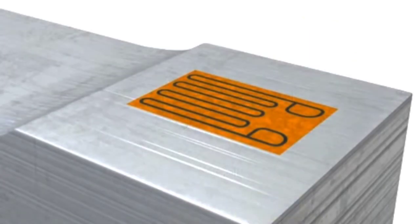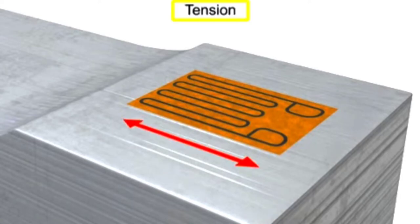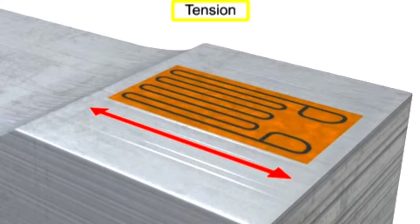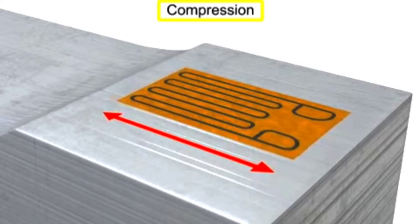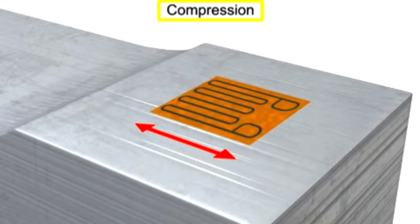As force or weight is applied to the load cell, the strain gauge deforms and causes the electrical resistance to change. In tension, the area narrows and the resistance increases, and conversely, in compression, the area thickens and resistance decreases.